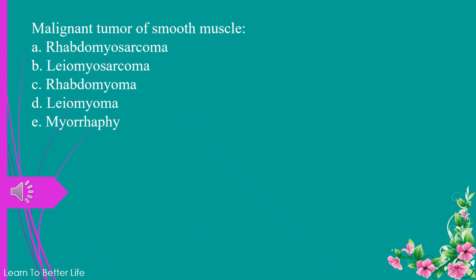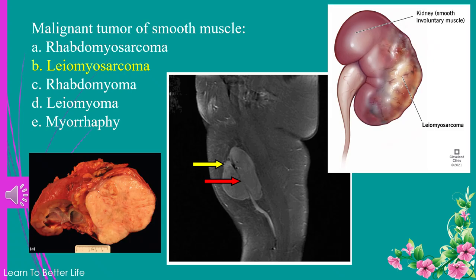Malignant tumor of smooth muscle. a. rhabdomyosarcoma. b. leiomyosarcoma. c. rhabdomyoma. d. leiomyoma. e. myorrhaphy. The answer is b. leiomyosarcoma.